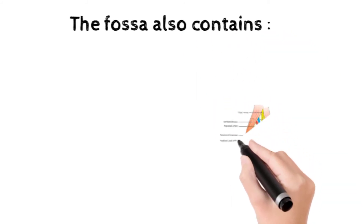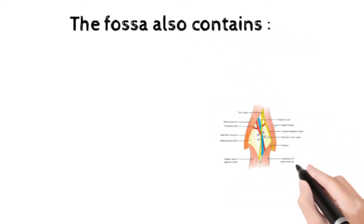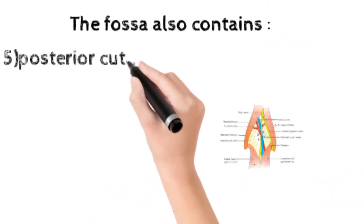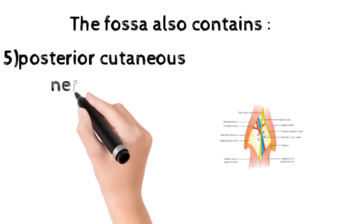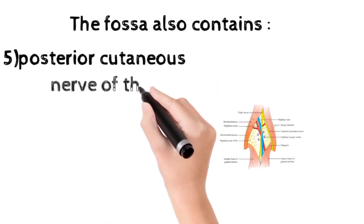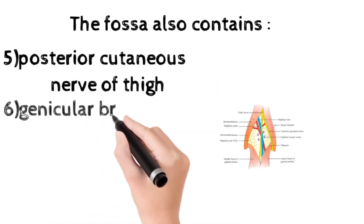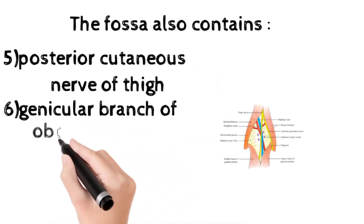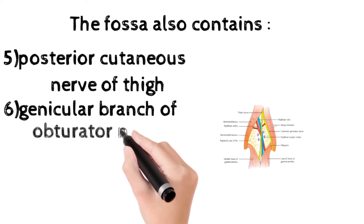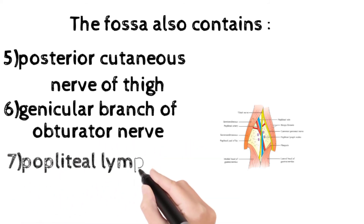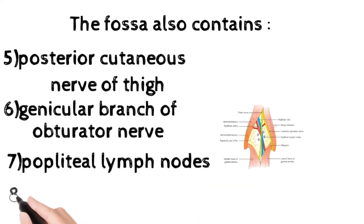The fossa also contains the following additional contents: the posterior cutaneous nerve of the thigh, the genicular branch of the obturator nerve, the popliteal lymph nodes, and fat.